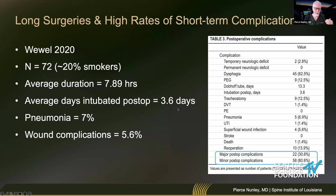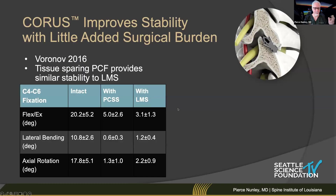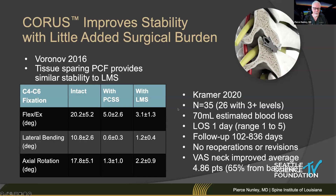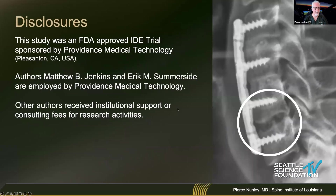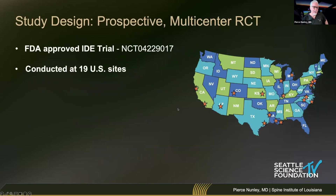Long surgeries and high rates of short-term complications were seen with the old technique. One of the things we looked at is the biomechanical stability of Chorus. Compared to lateral mass screws, it's very similar — statistically not dissimilar. Kramer published in 2020 on 35 patients showing minimal blood loss and no re-operations or revisions. This prompted the study. We wanted to look at differences in outcomes at 12 and 24 months. A couple of the authors are employees of Providence Medical; the rest of us received institutional support and consulting fees.